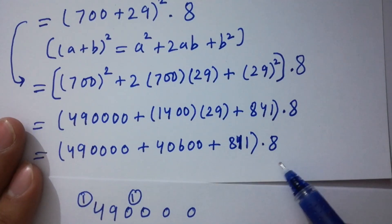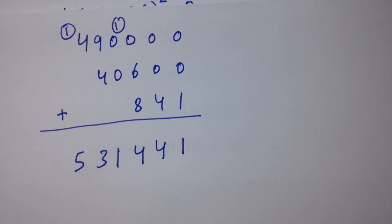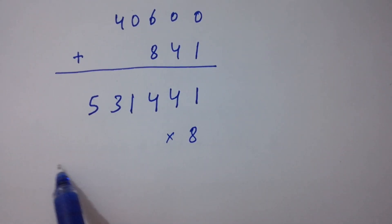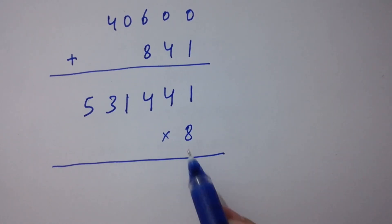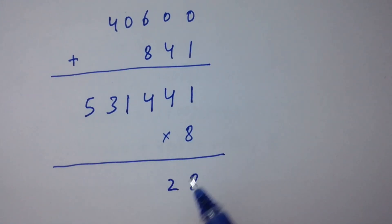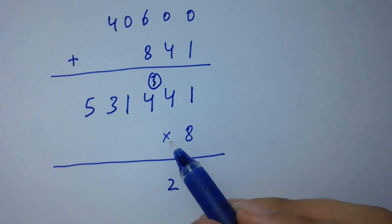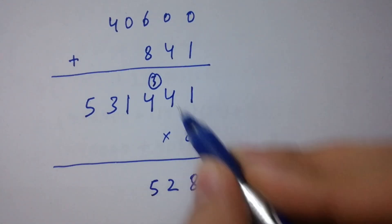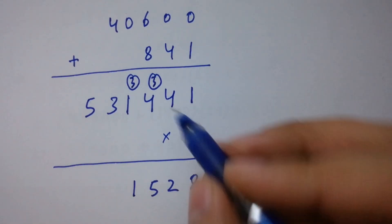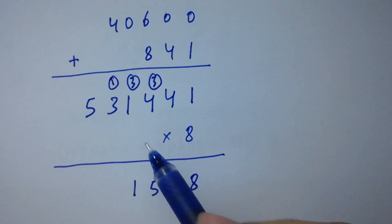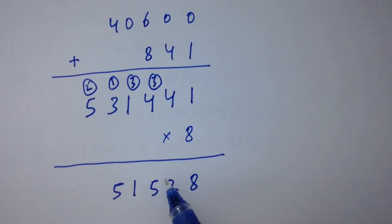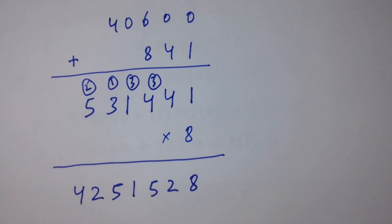In the next step we multiply by 8. 8 times 1 is 8, 8 times 4 is 32, 2 here 3 carry, 8 times 4 is 32 plus 3 is 35, 5 here 3 carry, 8 times 1 is 8 plus 3 is 11, 1 here 1 carry, 8 times 3 is 24 plus 1 is 25, 5 here 2 carry, 8 times 5 is 40 plus 2 is 42.